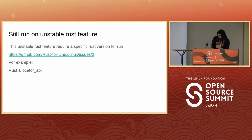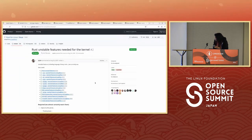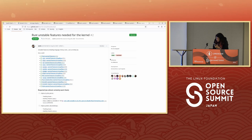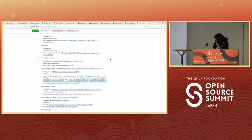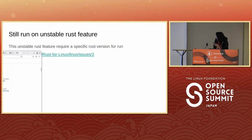Rust for Linux uses many unstable Rust features — here is the list of all the unstable features that Rust for Linux needs for the kernel, and there are actually many. That is why only one specific version of Rust practically works with Rust for Linux.